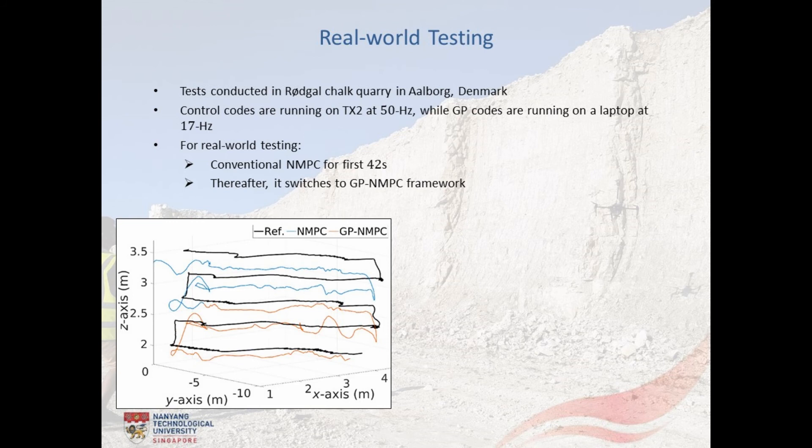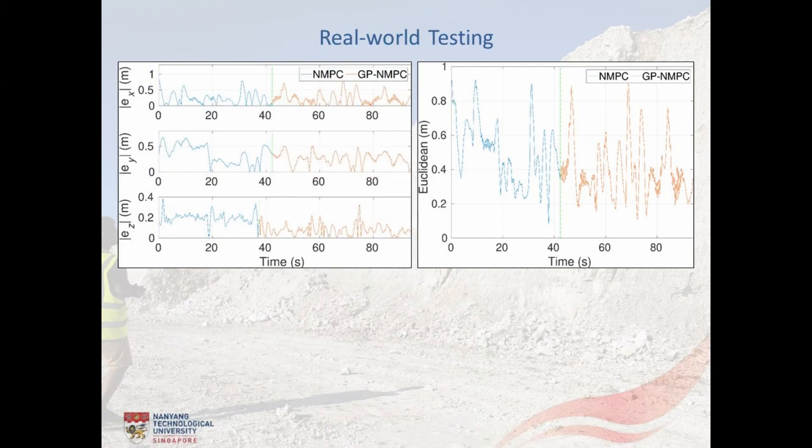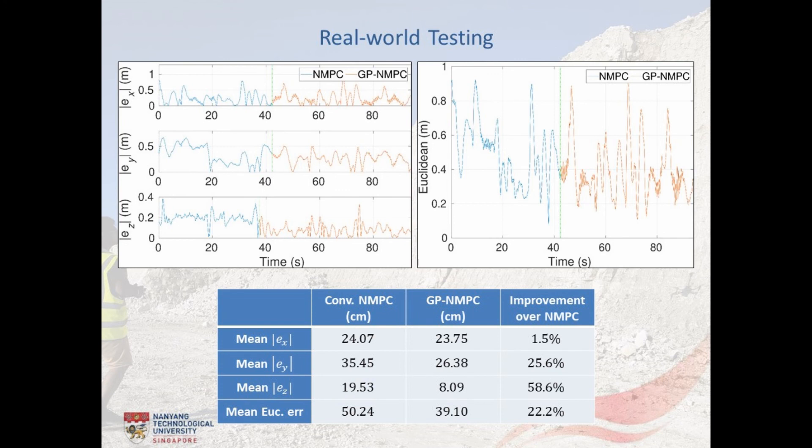Here are the trajectory tracking results for the conventional NMPC and the GP-NMPC framework and the disturbance estimation results for the GP, wherein the 95% confidence interval is also depicted to evaluate the predictions. One may notice that the predicted values are significantly noisy, resulting in the wider confidence intervals especially for Y disturbance, even though some pattern is visible for X and Z disturbances. The main reason for obtaining such noisy estimates is essentially the noisy feedback that is provided to the GPs for regression.